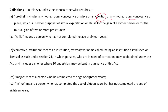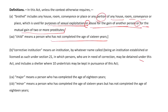Definitions under the Act: 'Brothel' means any house, room, conveyance, or place, or any portion thereof, that is used for the purpose of sexual exploitation or abuse for the gain of another person or the mutual gain of two or more prostitutes. 'Child' means a person who has not completed the age of 16 years. 'Major' means completed age of 18 years. 'Minor' means who has completed age of 16 years but not completed age of 18 years.